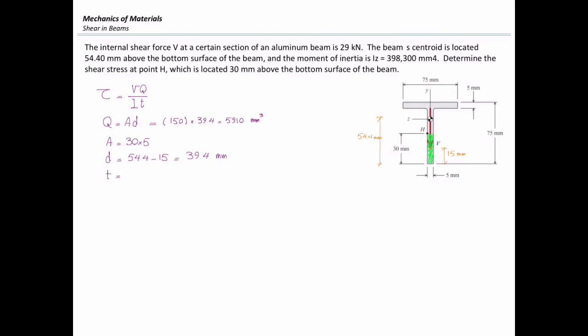Now I'm ready to go and plug the values into this equation. So shear force is 29 kilonewtons, which is equal to 29,000 newtons, Q is 5910, I as given in the problem statement is 398,300 mm to the fourth, and the thickness is 5 mm. So the value of shear stress at point H would be 86.06 MPa.